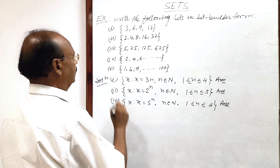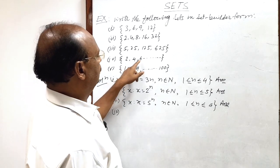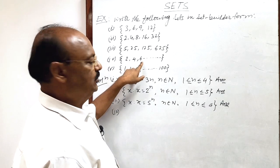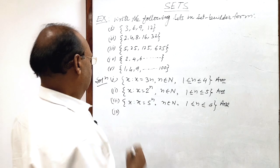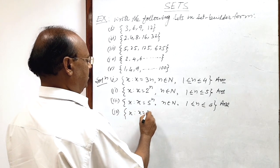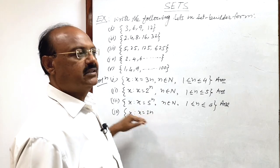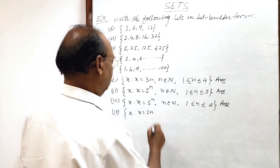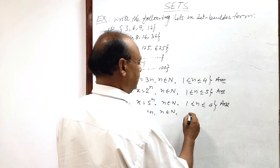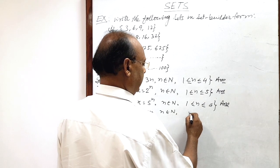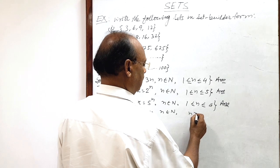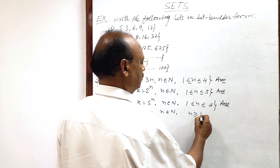The fourth part is: 2, 4, 6, ... This is 2 into 1, 2 into 2, 2 into 3, and this set is an infinite set. So we can write it as x such that x is equal to 2n — or clearly, x is an even number — and n belongs to the set of natural numbers such that n is greater than or equal to 1.